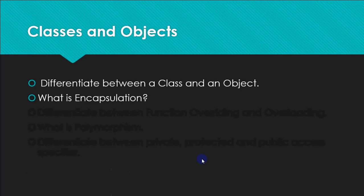Then comes: what is encapsulation? The proper definition is: wrapping up of data and functions to work upon that data in a single unit called a class is encapsulation. For example, if making a class Rectangle, we group data members like length and breadth, and operations like area and perimeter. The whole procedure of creating the class — grouping data and functions together — is called encapsulation.